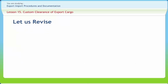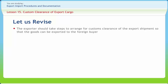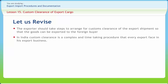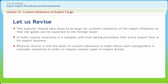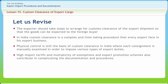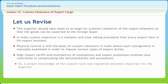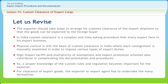Before we end, let us briefly revise what we have studied. The exporter should take steps to arrange for customs clearance of the export shipment so the goods can be exported to the foreign buyer. In India, custom clearance is a complex and time-consuming procedure. Physical control is still the basis of custom clearance in India, where each consignment is manually examined to impose various types of export duties. High import tariffs and multiplicity of exemptions and export promotion schemes also complicate the documentation and procedures. A proper knowledge of custom rules and regulations is therefore important for the exporter.